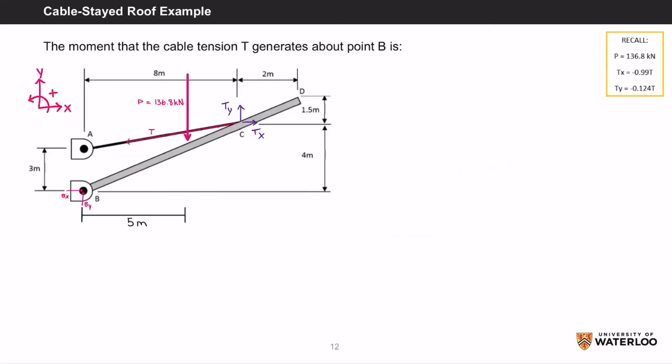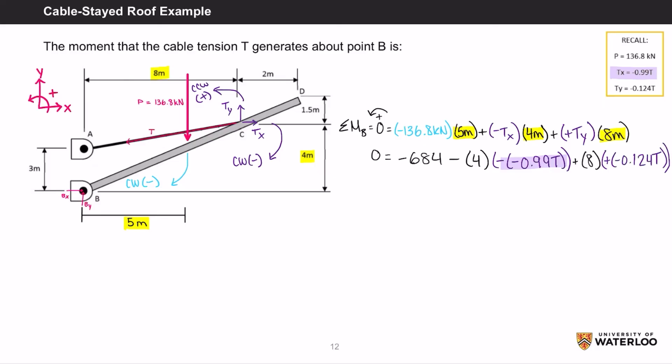Now we have to figure out the moment that the tension cable generates about point B. Remember, moment is equal to force times the perpendicular distance. The moment about B is equal to 0, which is equal to negative 136.8 kN times 5 meters plus negative Tx times 4 meters plus positive Ty times 8 meters. Remembering that Tx equals negative 0.99t and Ty equals negative 0.124t, rearranging the equation, you'll get T equals 230.3 kN.